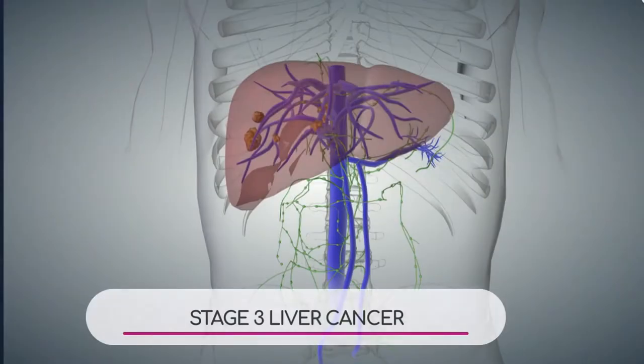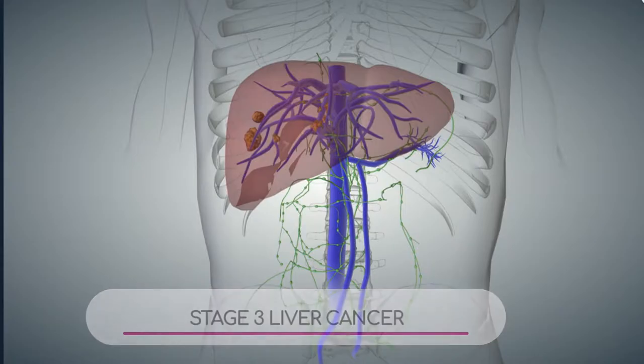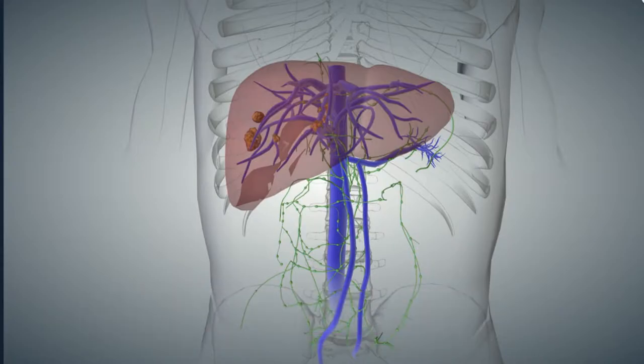We have a 3D image of what we classify as stage 3 liver cancer. Dr. Chung, if you could walk over to our 3D image wall and basically tell us what we're looking at and how liver cancer varies for different stages.